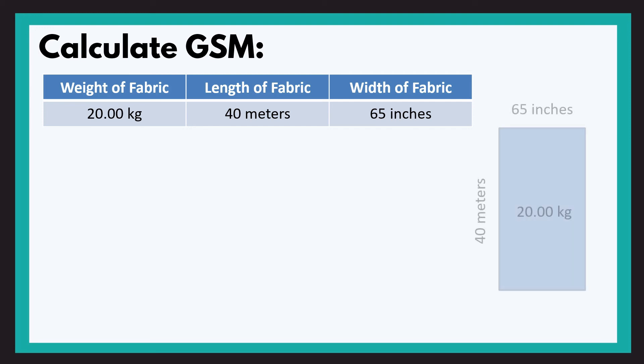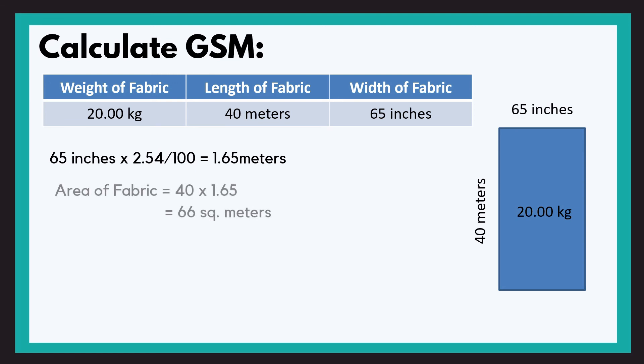I have made a sketch which makes it easy to understand. 65 inches width is given, 40 meters length is given, and this fabric weighs 20 kgs. So first what we do? 65 inches, we convert: 65 inches × 2.5, it becomes centimeters, and we divide by 100 to get meters. So 1.65 meters is the width. Now we'll find the area of fabric: 40 meters × 1.65 meters equals 66 square meters.